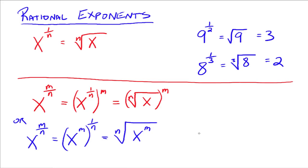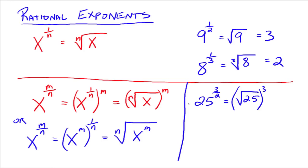So x to the m over n can be written in two different ways. For example, 25 to the 3 halves — to rewrite in radical notation, that's the square root of 25, all raised to the 3rd power. By order of operations, the square root of 25 is 5, and 5 cubed is 125. So 25 to the 3 halves is the same thing as 125. I typically keep the numerator on the outside.